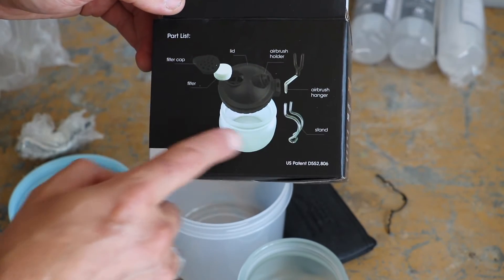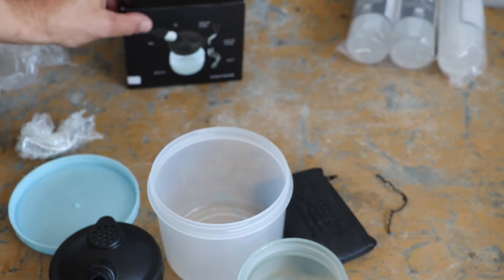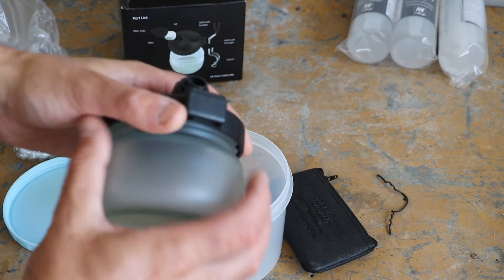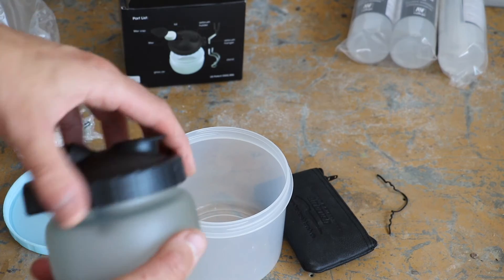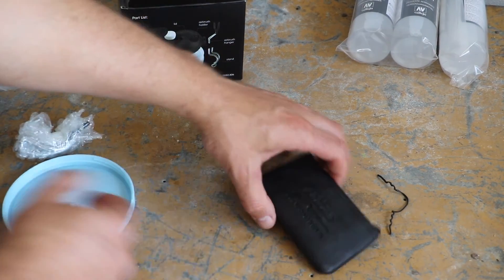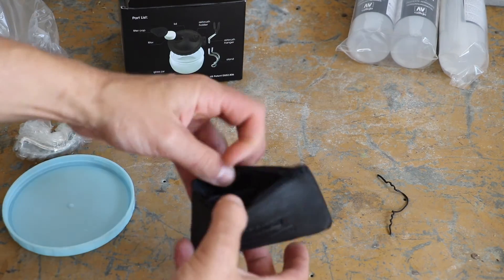And then you can use that to clean your airbrush with so there we are you can see on the side here you've got an airbrush holder and a stand and that will filter it. So I'm not entirely sure how that is used either we'll just cover that together but this came as part of the package and part of the kit when I bought the airbrush.